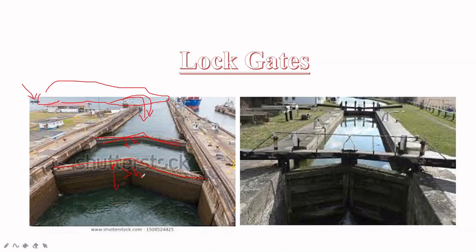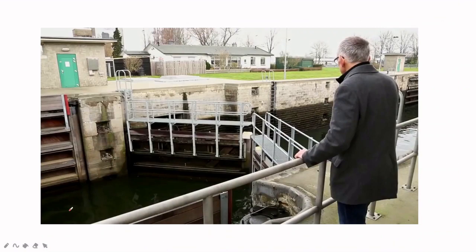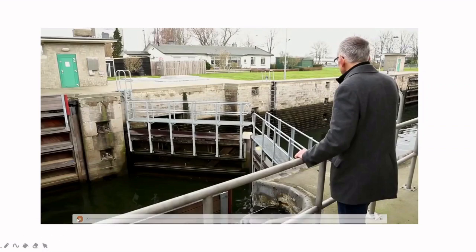One function of lock gates is to maintain the water level. In this picture you can see lock gates on a bigger channel or lake. The lock gates are provided here, and they are also used to provide navigation for ships or boats. So lock gates are mainly used to navigate ships or boats through water bodies and also to maintain the water level.